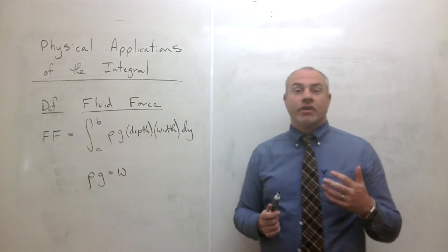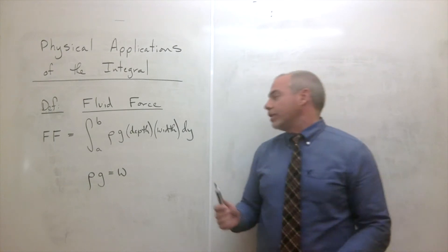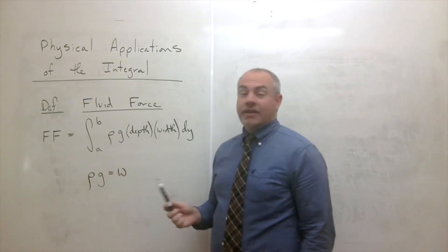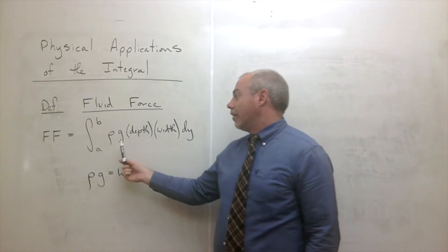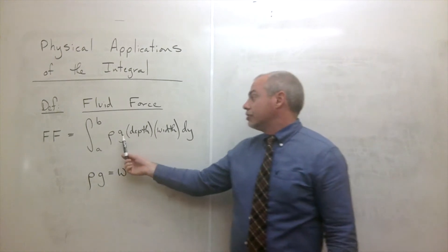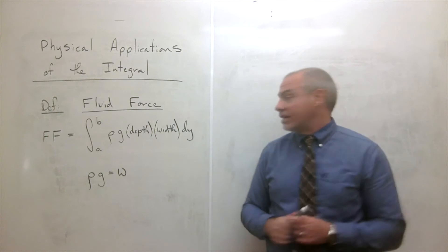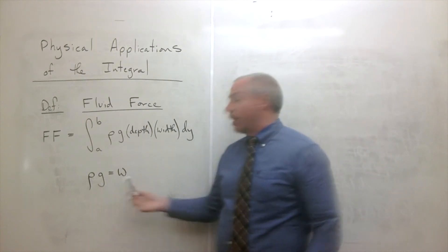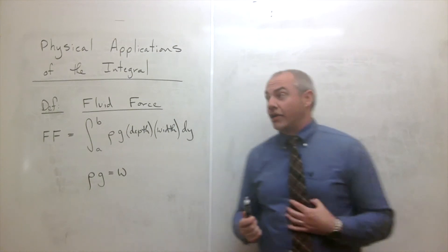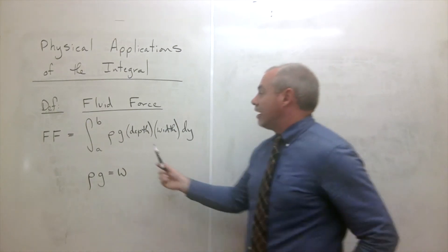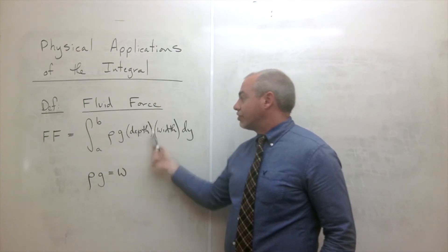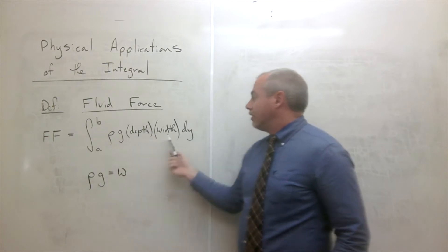We need to know what these different things mean. Rho represents the density of the fluid that we're being submerged in. G is the force of gravity. Sometimes I just call rho times g, w, which is the weight density—typically of water but could be some other fluid—times the depth that you're at at the time, and this is a function of y, then times the width.